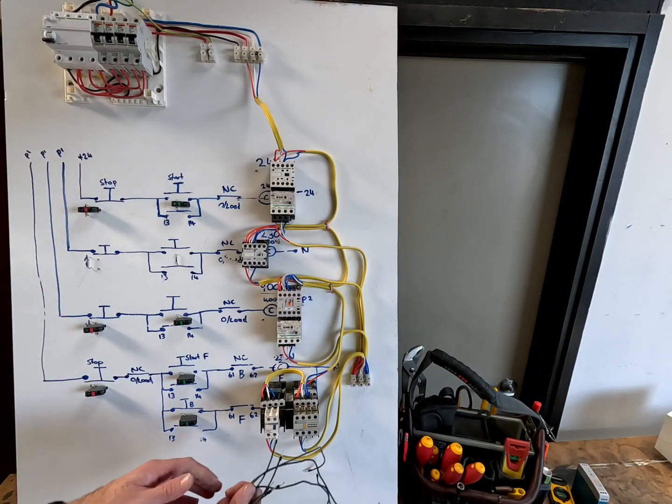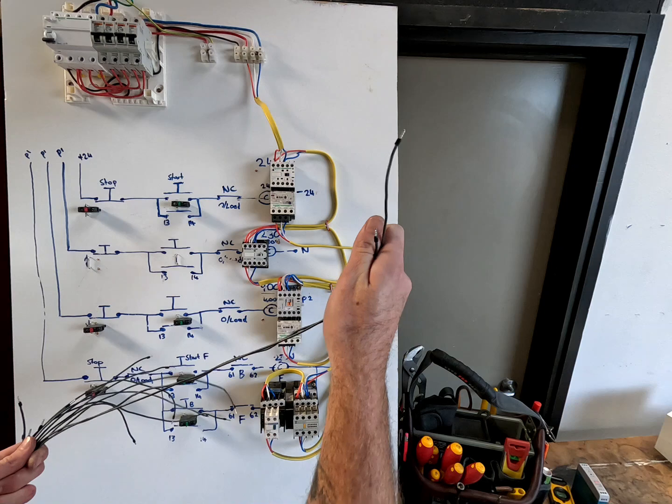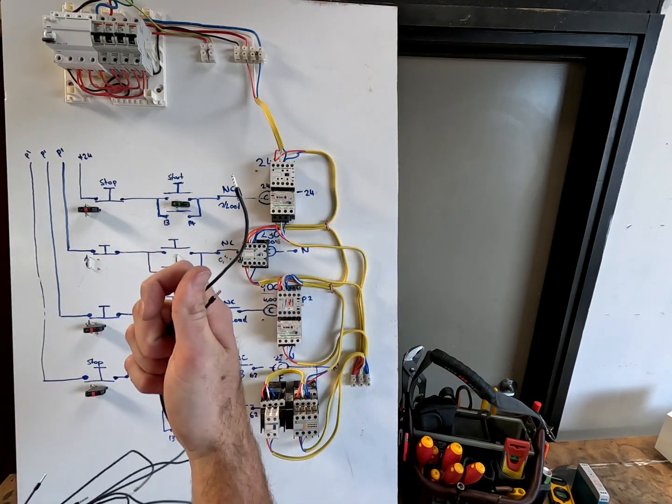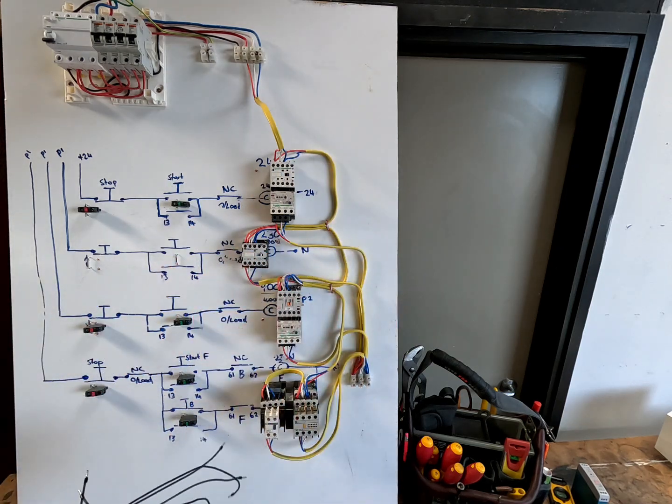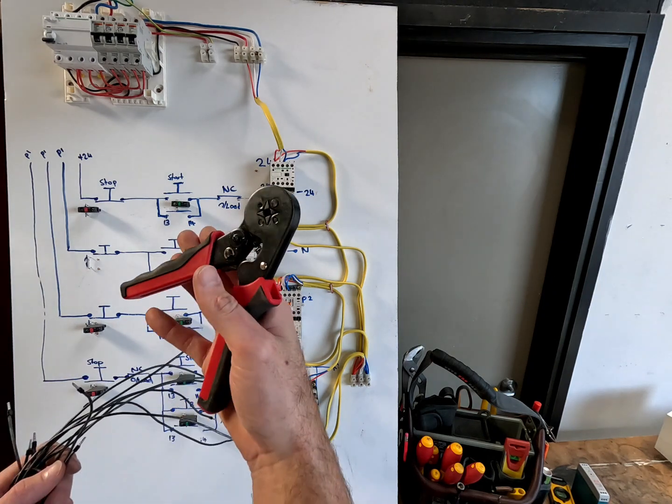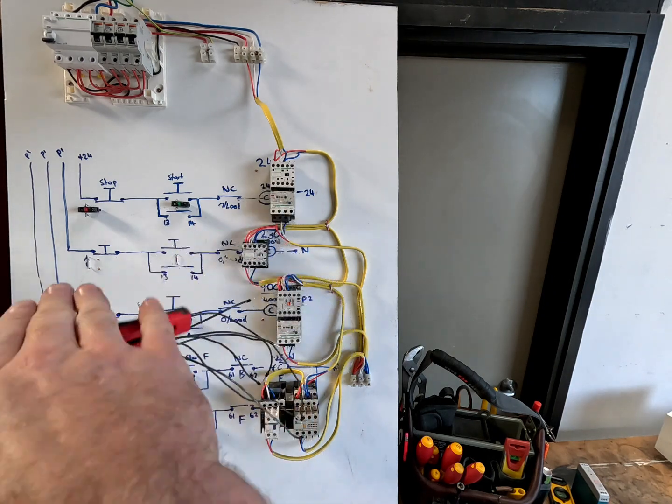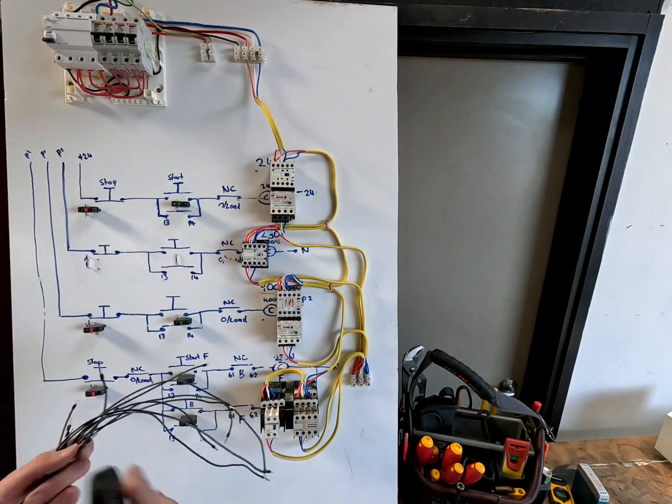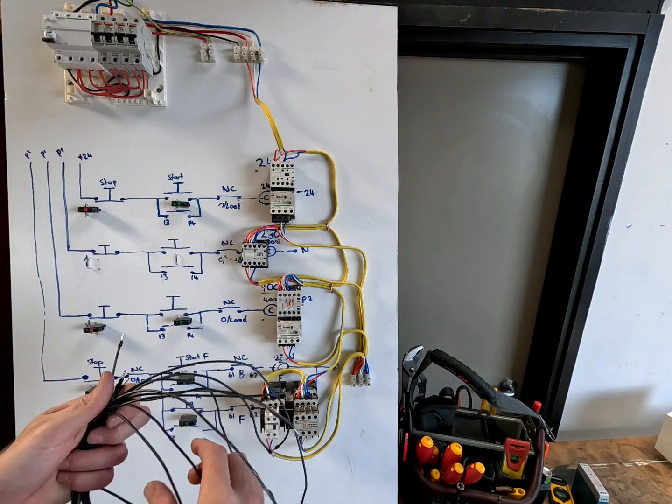Okay so I've just made myself a whole lot of these leads and I've put ferrules on the end. Ferrule crimps. If you don't have any of those you should get yourself some. Real good for little jobs like this when you're putting them into small terminals. Just saves a bit of hassle. Keeps it nice and neat.